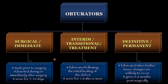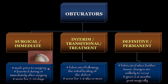Now the types of obturator. There are three types: the surgical or immediate obturator, the interim transitional or treatment obturator, and the definitive or permanent obturator. This classification is based on the timing when these obturators are given. The surgical or immediate obturator is made prior to surgery — the impression is made before surgery, the defect is created in the cast, and it is inserted during or immediately after the surgery. They serve for seven to ten days.